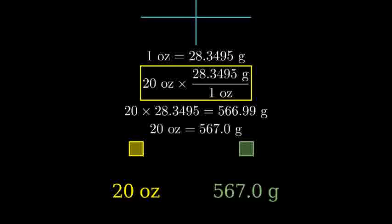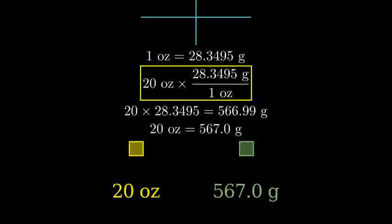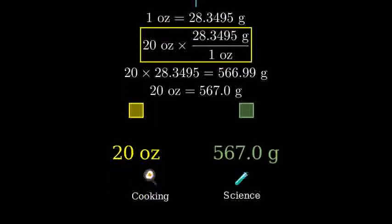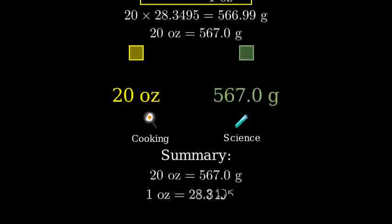This conversion is useful in many real-world situations. For example, when cooking with international recipes or when measuring ingredients for scientific experiments. To summarize, 20 ounces equals 567.0 grams. Remember, you can always use the conversion factor of 28.3495 grams per ounce for similar conversions.